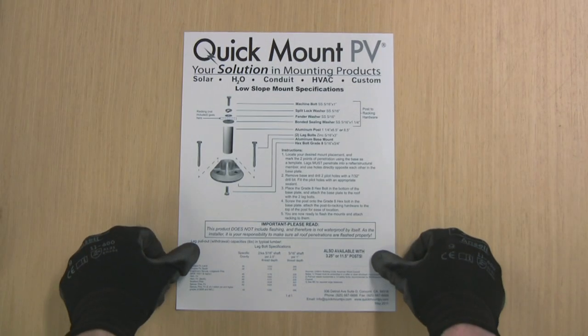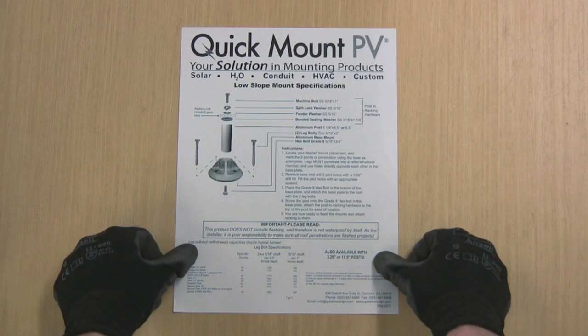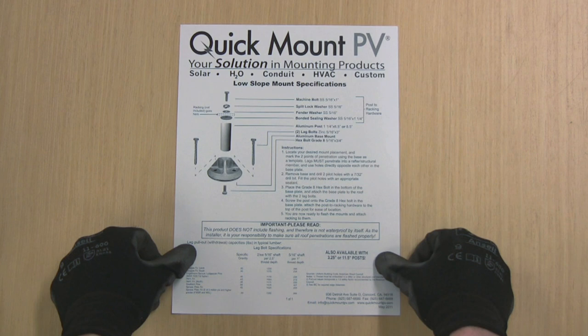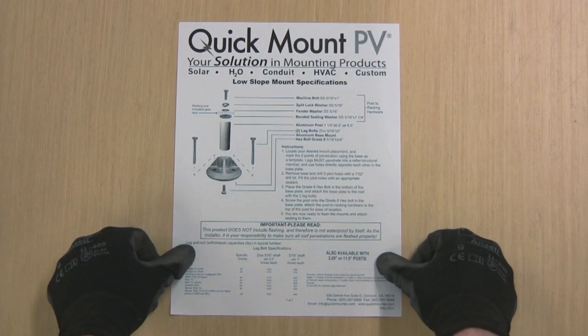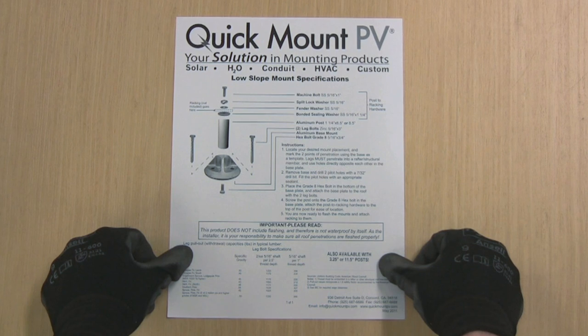Roofs vary considerably, and to maintain the roof warranty and reduce your own liability, it's important to study the roofing manufacturer's warranty, carefully follow the Quick Mount PV instructions that come in the box, and consult the engineer of record whenever possible.